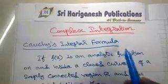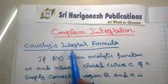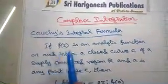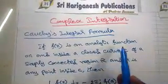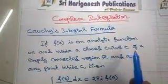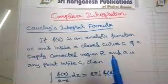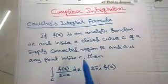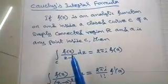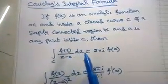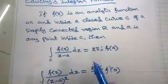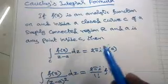Complex integration. Cauchy's integral formula: if f of z is an analytic function on and inside a closed curve C of a simply connected region R, and A is any point inside C, then the integral over C of f(z) divided by (z minus a) dz equals 2πi times f(a). This is Cauchy's integral formula.